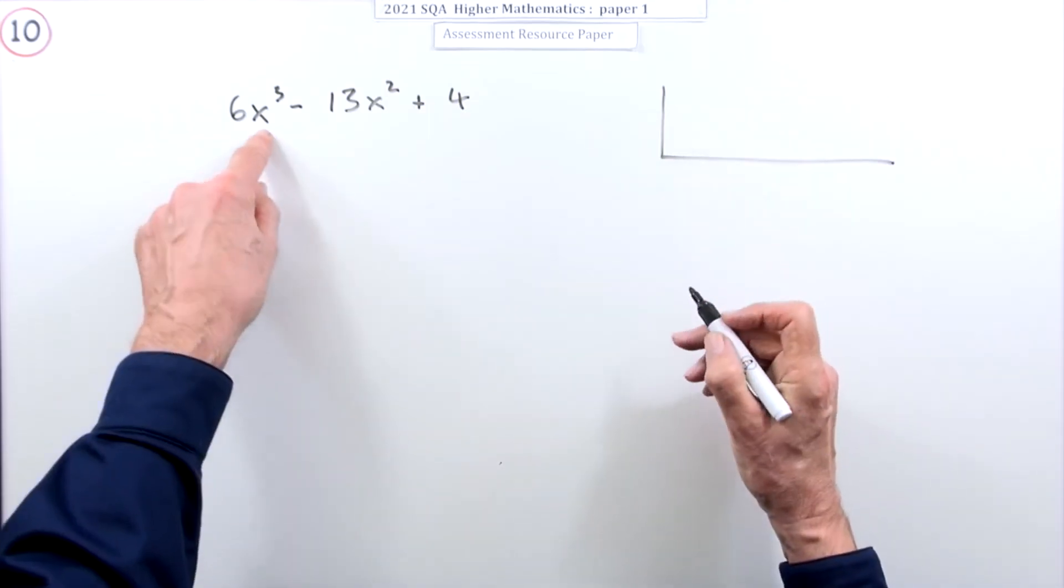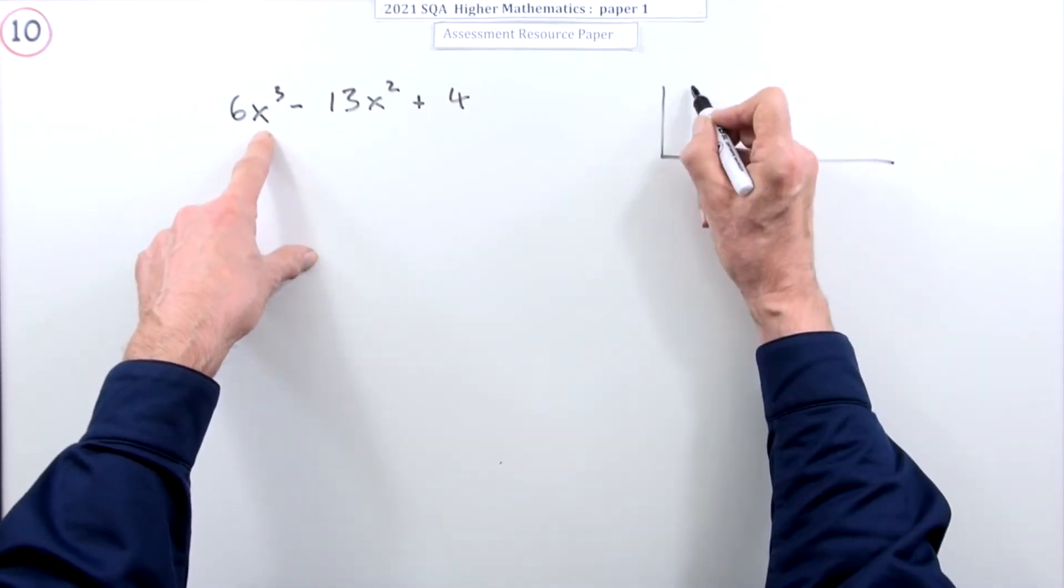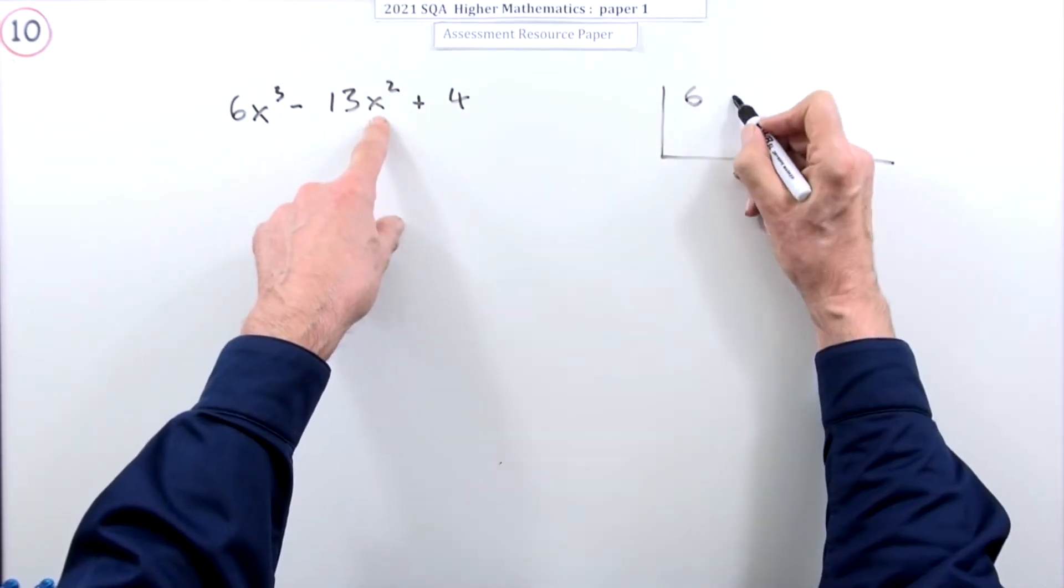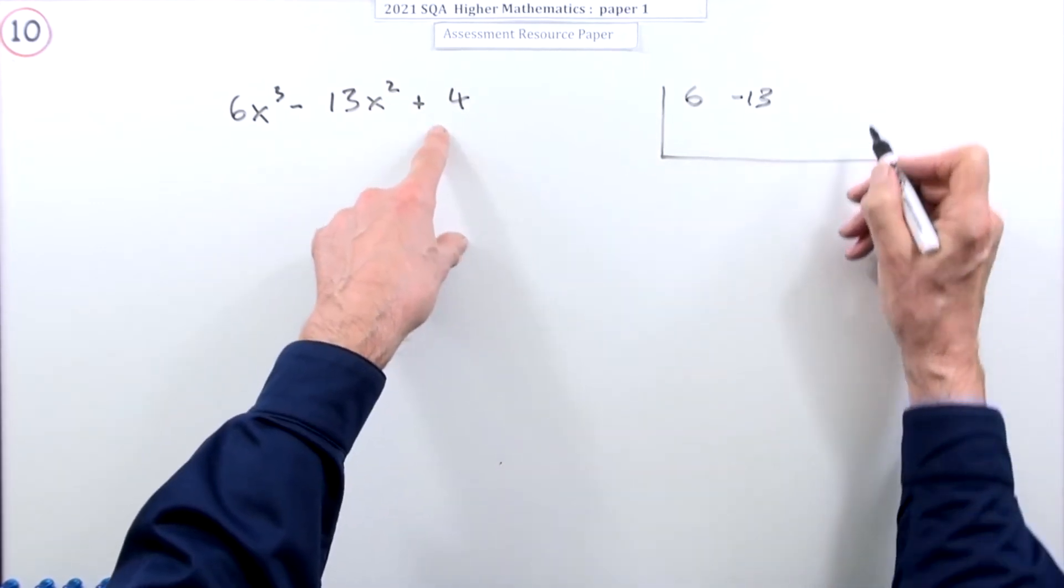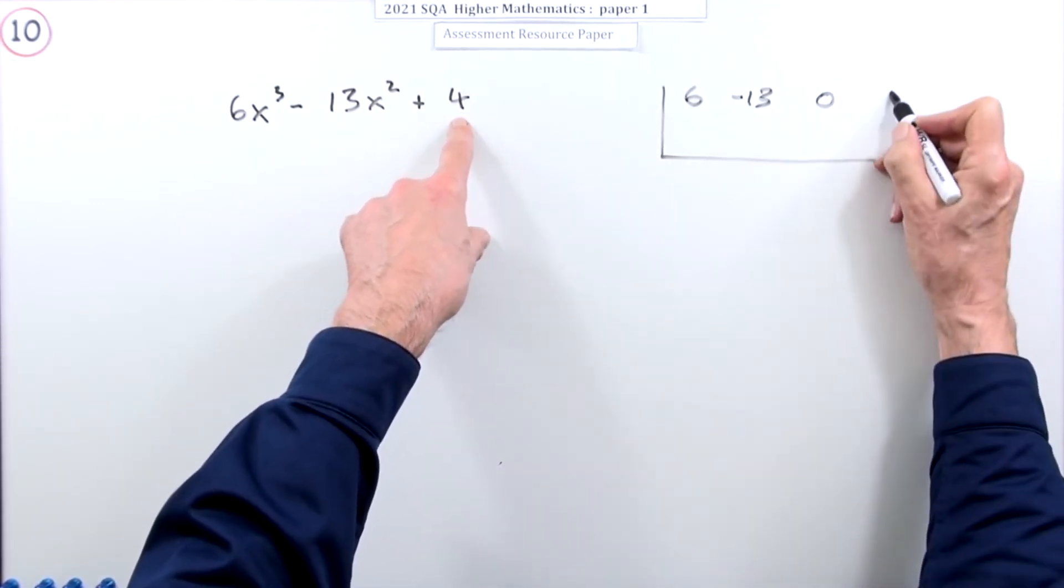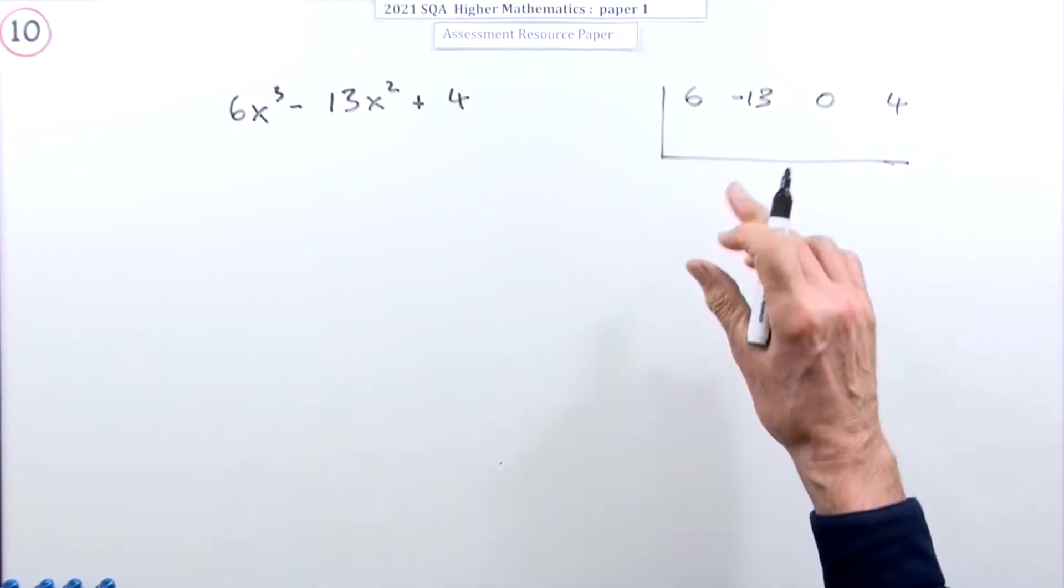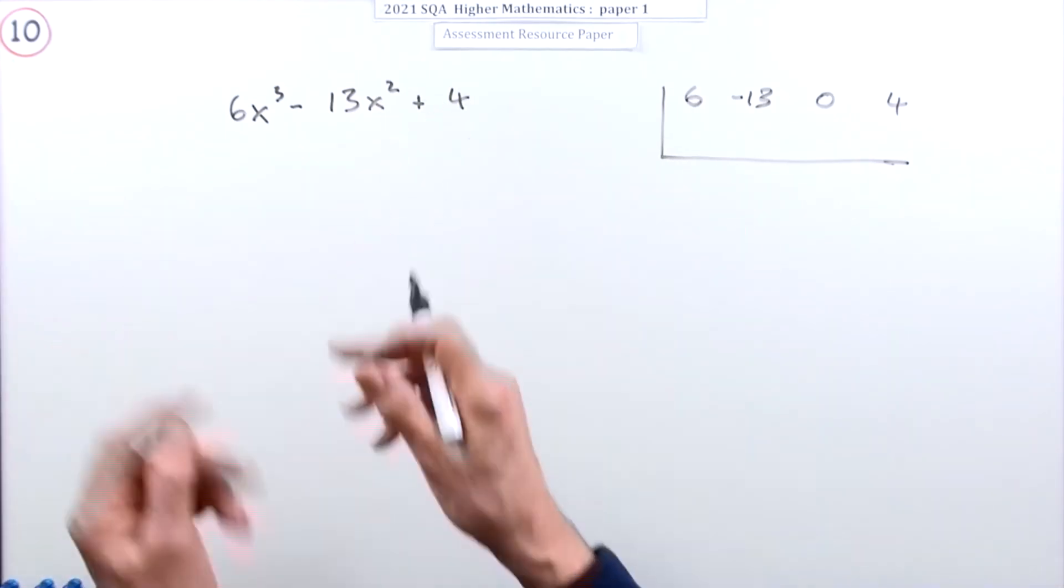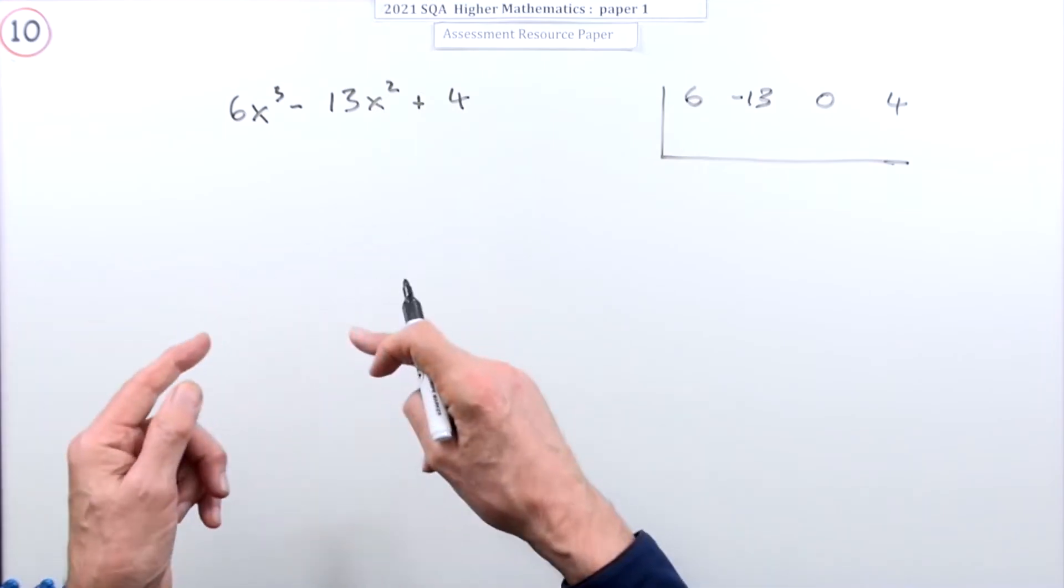You've got the x cubed term, that's six. You've got the x squared term, negative 13. The x term will be a zero and there's the number on its own, four. Now the problem becomes it doesn't give you any clue. There's no graph anywhere which might tell you one of the numbers that might give it a zero.